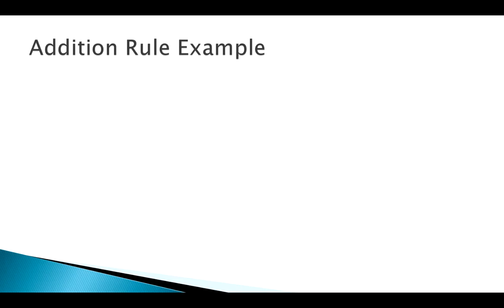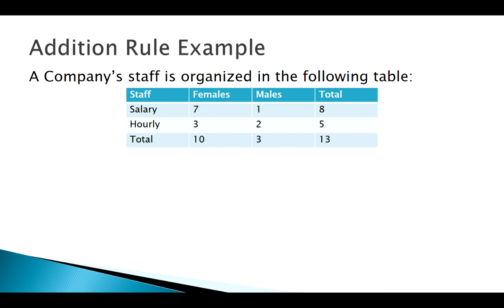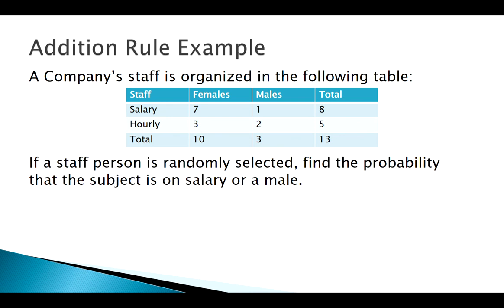Okay, welcome back. Let's look at some of these probability rules and some examples demonstrating them. Let's start with the addition rule. Say we've got a company and their staff roster organized into a contingency table. We want to randomly pick a person. What's the probability they are on salary or male?